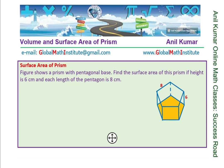And the second question: we are given a prism, again a pentagonal prism with side lengths of 8 and height of 6. But in this case, we need to calculate the apothem — find apothem — and then find the area of the base. That is the second question.